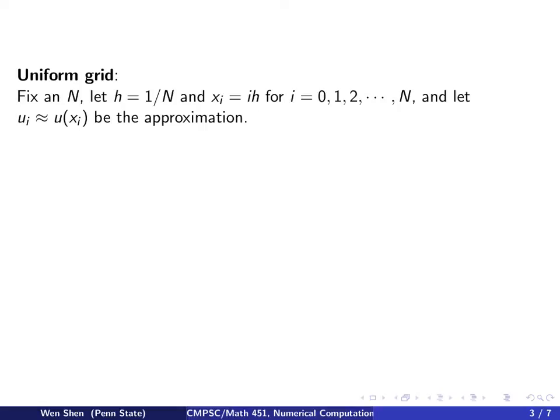Let's set up a uniform grid. Fix N, the total number of points, h = 1/N, xi are the grid points, and we denote ui to be the approximation of u at xi. This is standard notation.